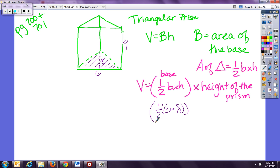So six times eight is 48. So one half of 48 gives me 24. Then we times this by the height of the prism, which is nine.